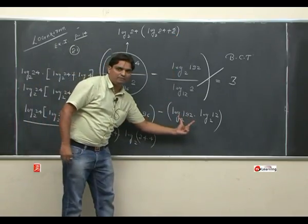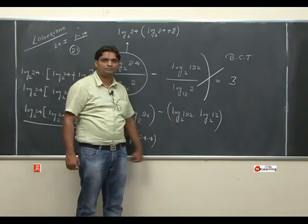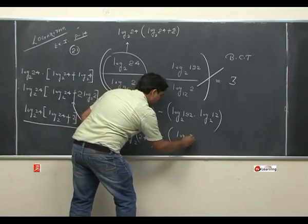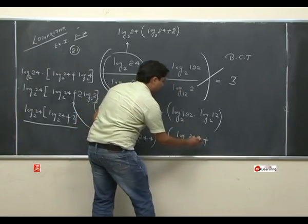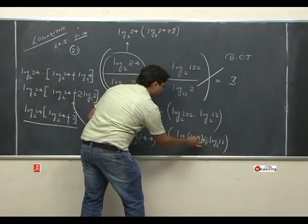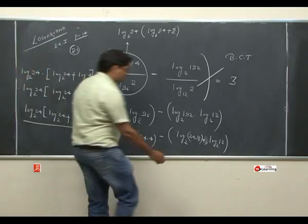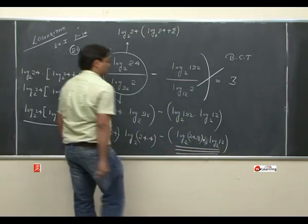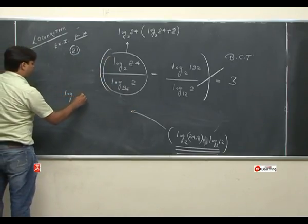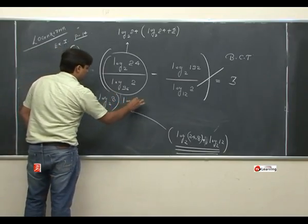अब इस number को भी हम 24 में reduce करेंगे। 192 को split करो in terms of 24 — 192 = 24 into 8. Minus log(24 dot 8) base 2 into log 12 base 2 as it is, no change. यह into plus में convert जाएगा। तो: minus [log 24 base 2 + log 8 base 2] into log 12 base 2. Second term आप solve करेंगे — simplest form में convert करें।